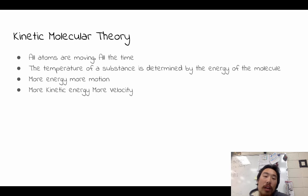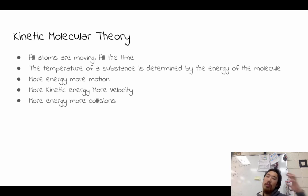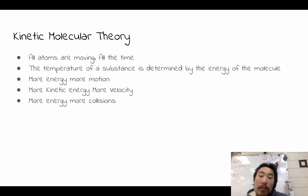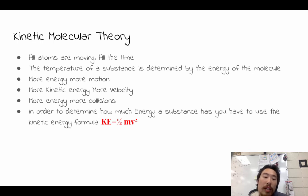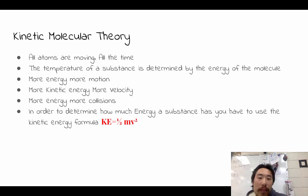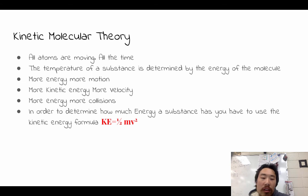If there is more kinetic energy, that means there is more velocity. Obviously if things are moving around more, they can collide more, which relates to PV = NRT — the pressure portion. In order to determine how much energy a substance has, you use the kinetic energy formula: KE = ½mv². There are also different variations: 3/2 NRT, or 3/2 times pressure times volume, which we'll go over later.